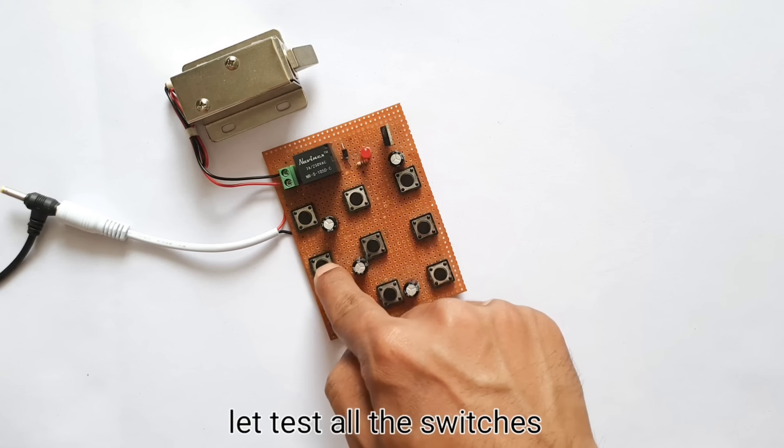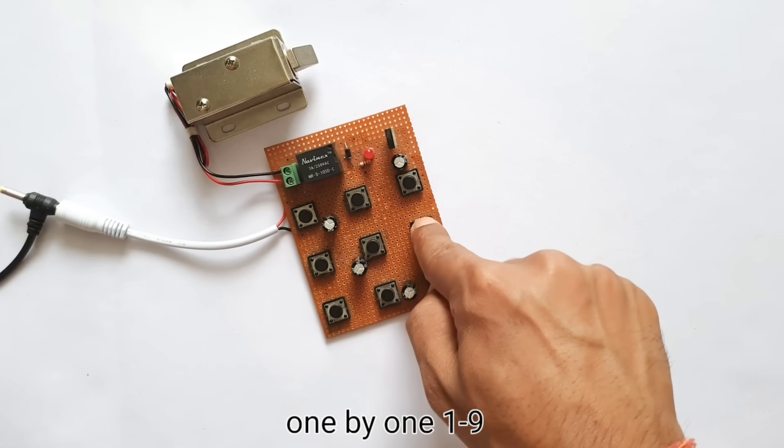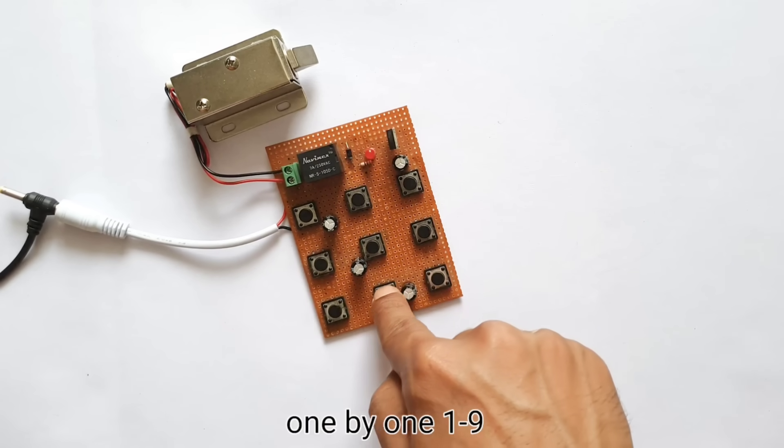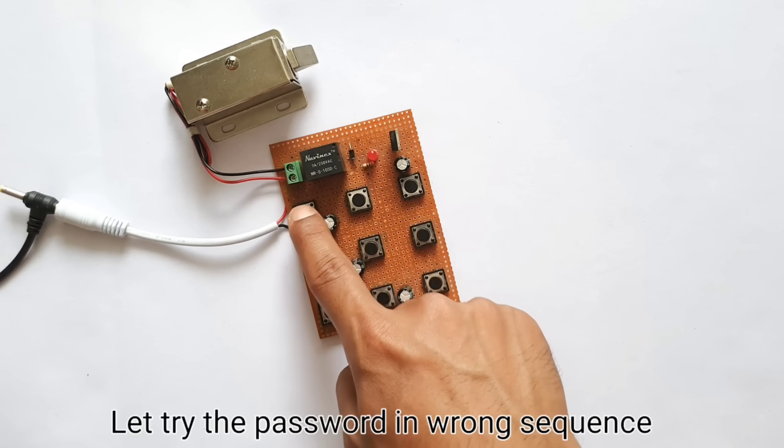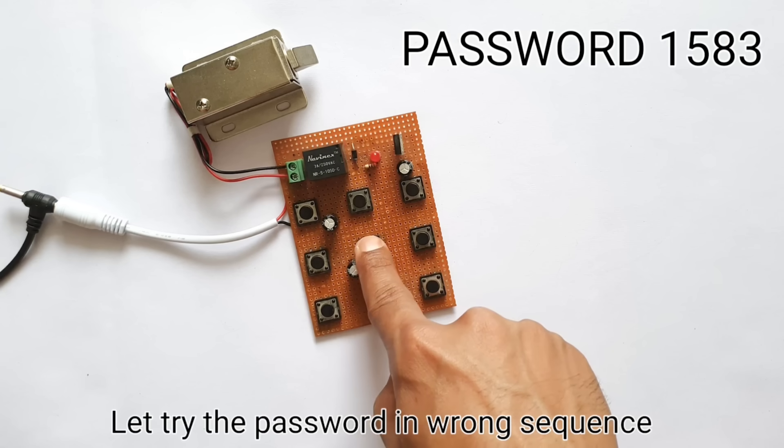In this system, we've used a total of nine switches, where each switch represents a specific digit in the password. Now, let's say someone tries to enter the wrong password. The system will immediately detect it, and the door will not open.